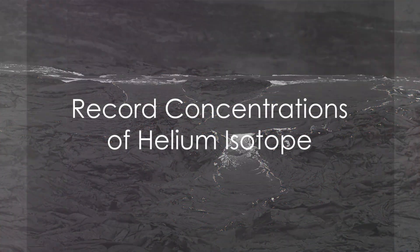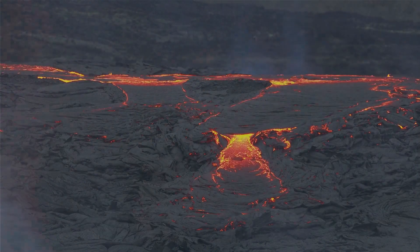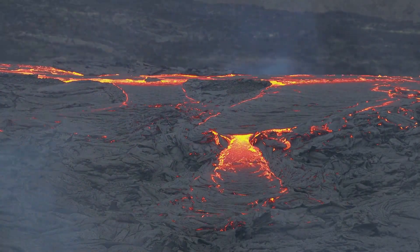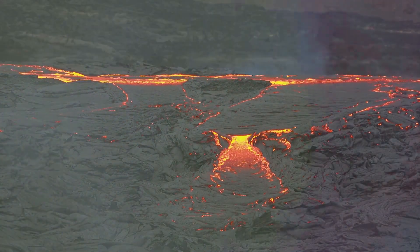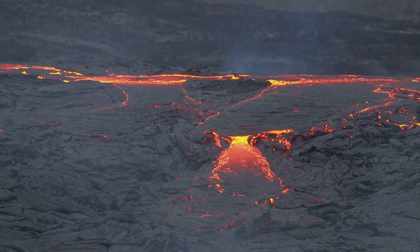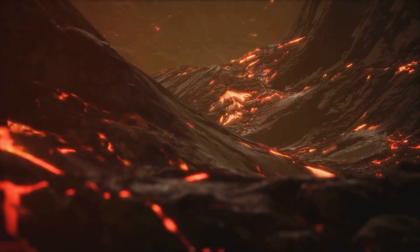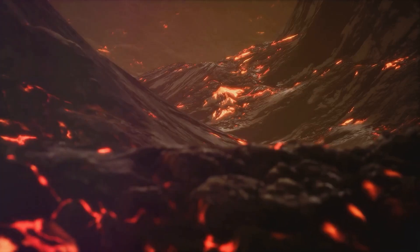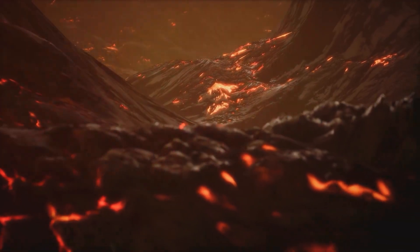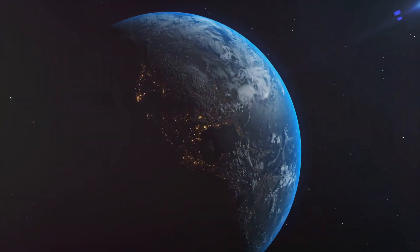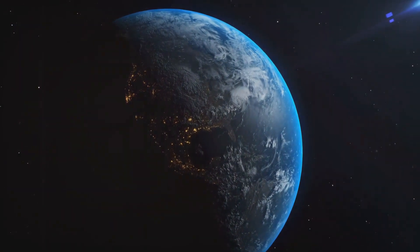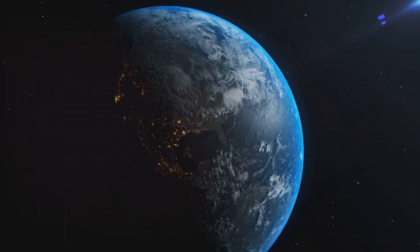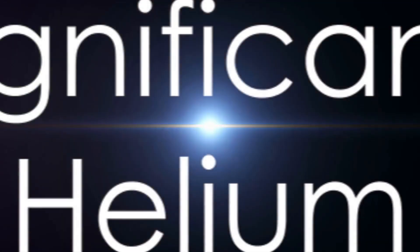In an exciting new discovery, geochemists from the California Institute of Technology and the Woods Hole Oceanographic Institution have detected record concentrations of a helium isotope within 62 million-year-old Arctic rocks. This intriguing find is the most compelling evidence to date of a slow leak in Earth's core. But why is this important?